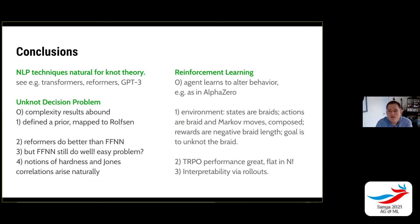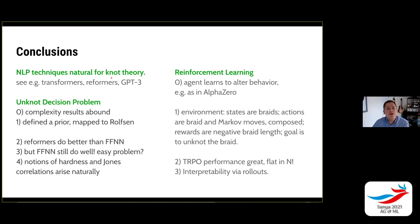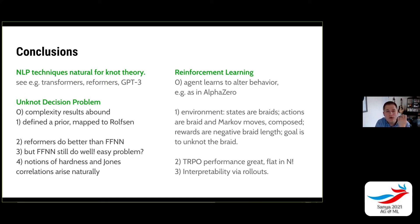This is one of the general rules of thumb in reinforcement learning — humans can sometimes understand rollouts, just like when we watch AlphaZero play chess. Natural language processing techniques are natural for knot theory. We used these reformer architectures and something called a shared QK transformer. For cool things to look up, Google GPT-3 examples and see what's out there. We tackled the unknot decision problem — there are a lot of complexity results — and we generated data by defining a prior, mapping it onto the Rolfson table where possible.